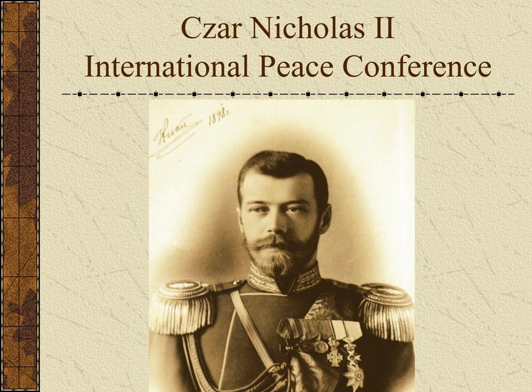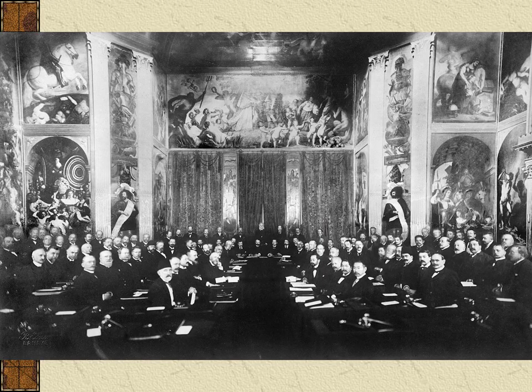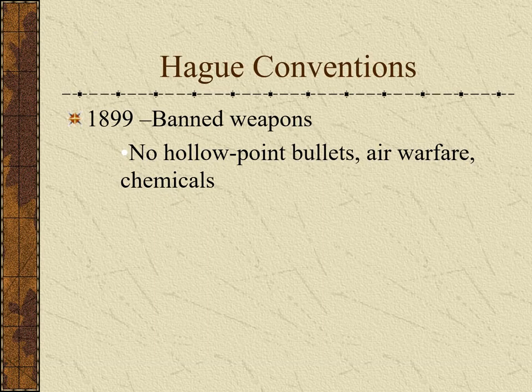Czar Nicholas II wanted to be seen as a world leader, so he formed an international peace conference held at a place called The Hague. He brought together leaders from all over the world to come up with more agreements — the Hague Conventions of 1899.